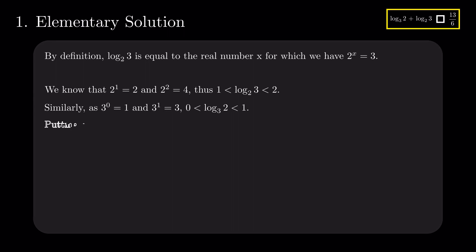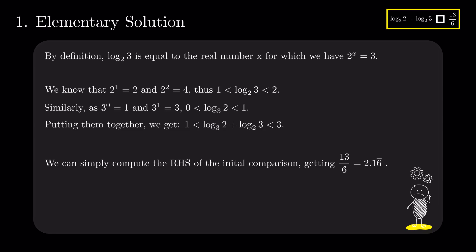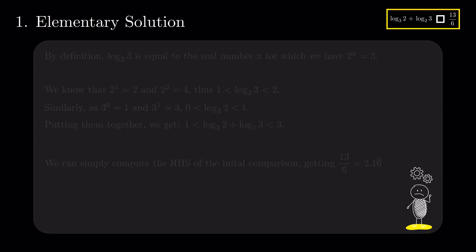We can sum the two inequalities getting that log base 2 of 3 plus log base 3 of 2 is between 1 and 3. Now, we come back to the right-hand side of the initial comparison. Compute 13 divided by 6, which is equal to 2.16 repeating. This value is between 1 and 3, so the first bounds for the sum are not good enough.